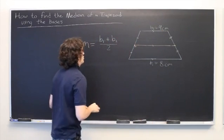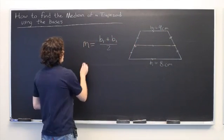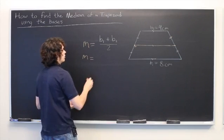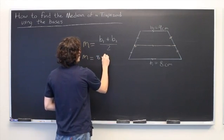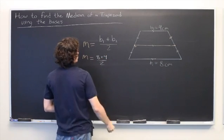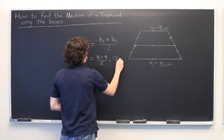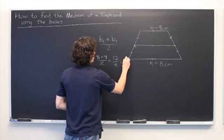Well, we can simply plug that into our formula and we see that m is equal to 8 plus 4 over 2, equal to 12 over 2, which is simply 6.